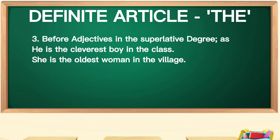The third point: the is used before adjectives in superlative degrees. We know that there are three degrees of comparison: positive, comparative, and superlative. For example: 'He is the cleverest boy in the class.' 'She is the oldest woman in the village.'